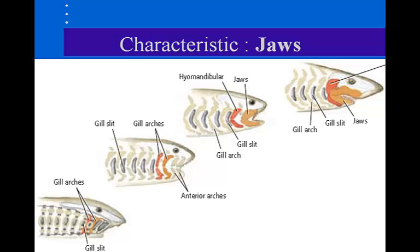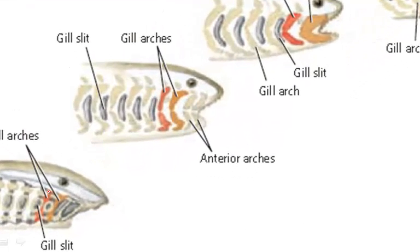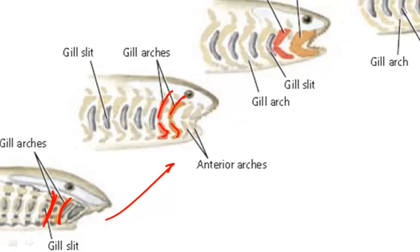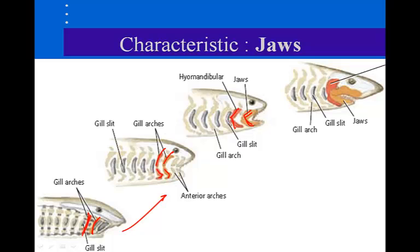The anterior gill arches are what evolved to form jaws. If we take a look, these are our anterior gill arches, and as we move we can start to see these begin to separate, and now we're starting to see that jaw-like characteristic until we actually have a jaw with the hyomandibular bone. Remember the hyoid is the bone in humans — if you think about a human's jaw, there's a little bone that sits floating right underneath your jaw; that's your hyoid bone, and you have your mandible, meaning jaw.